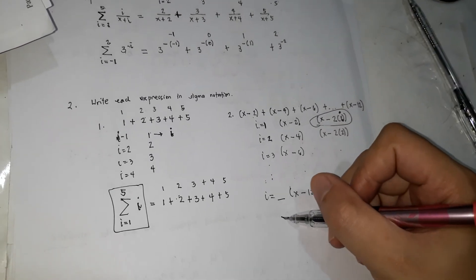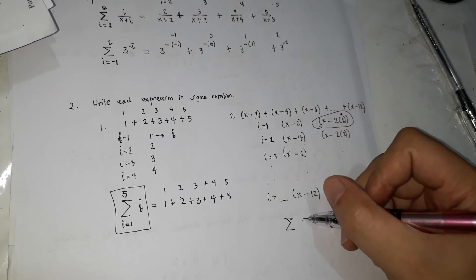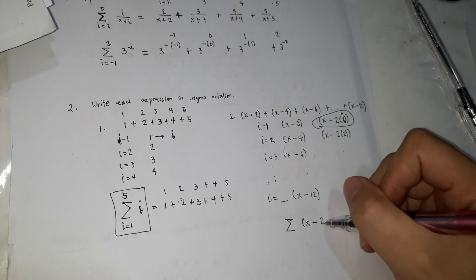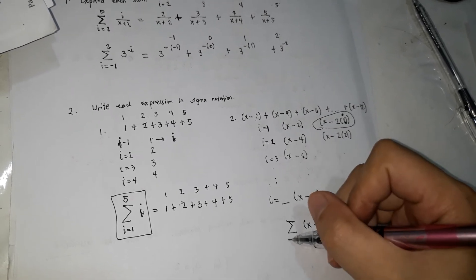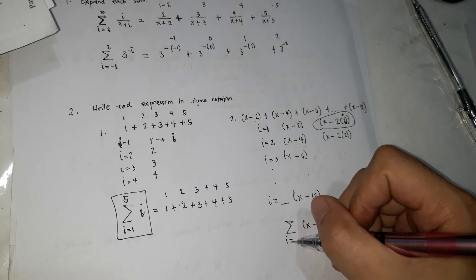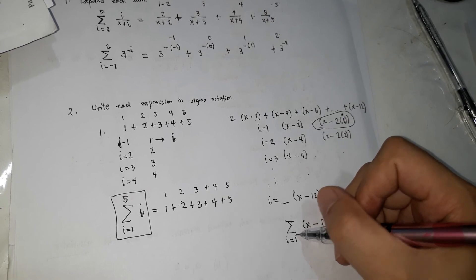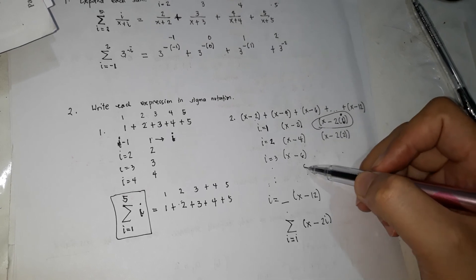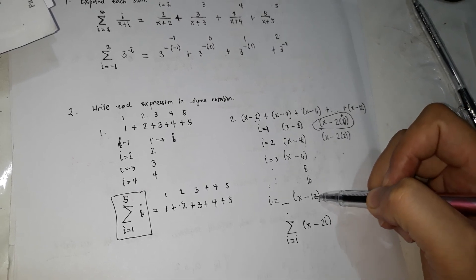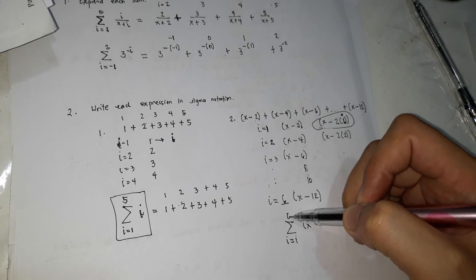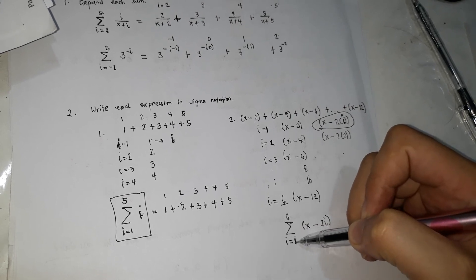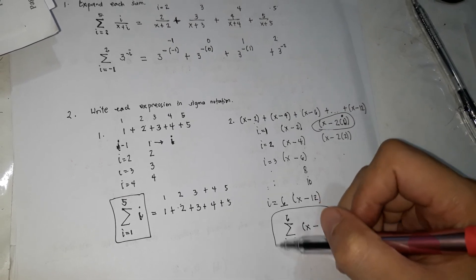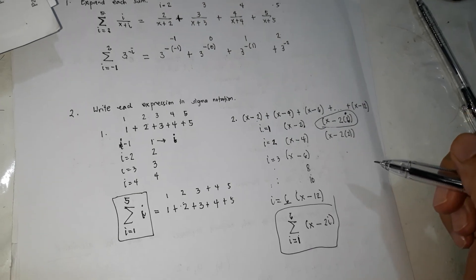So summation of x minus 2i, i is from 1 until kailan to siya? 2, 4, 6, 8, 10, 12. It is in the 6th so galing from 1 to 6. So this is now the sigma notation.